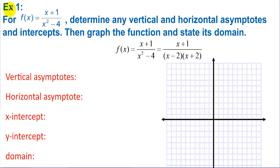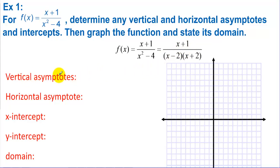In Example 1, the first step is to factor what we can. So x² - 4 factors into (x - 2)(x + 2). Since we don't have the same factor in both the numerator and denominator, there are no holes. Vertical asymptotes are where the denominator equals zero, so we have vertical asymptotes at x = 2 and x = -2.